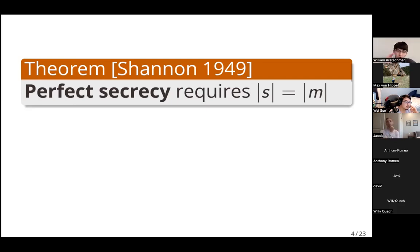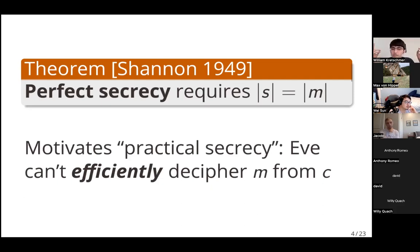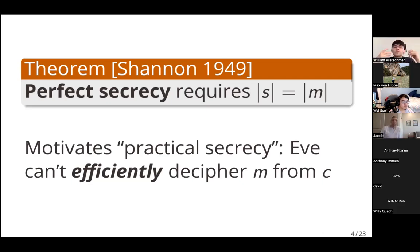This motivates, rather than perfect secrecy, a different notion of cryptographic security which you might call practical secrecy, which basically just means that for any efficient eavesdropper, it should be computationally difficult for the eavesdropper to decipher the message M given the ciphertext C. Shannon's paper in the 40s is kind of the first paper where this notion of computational secrecy was rigorously defined and taken seriously.